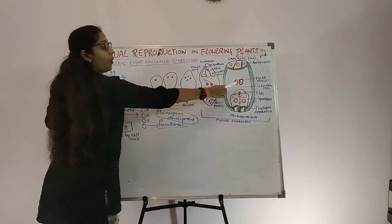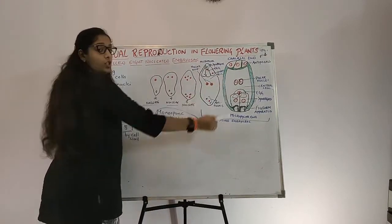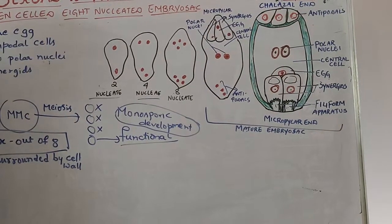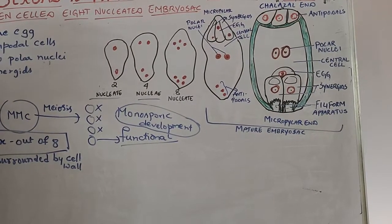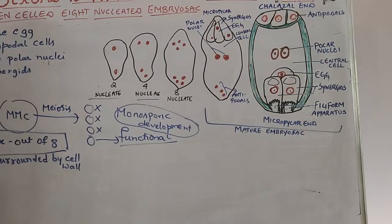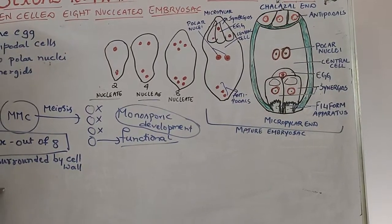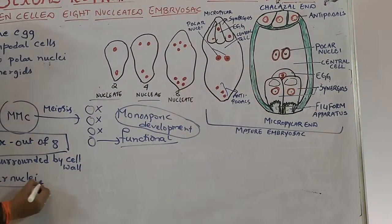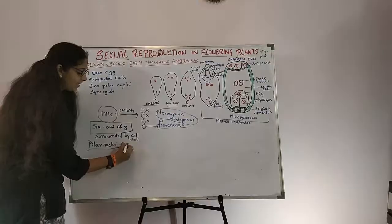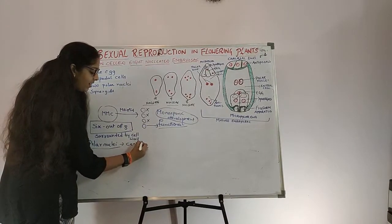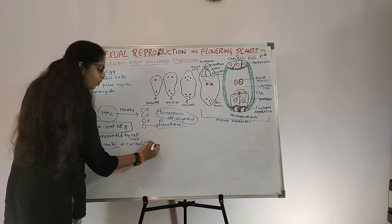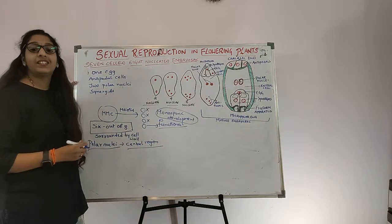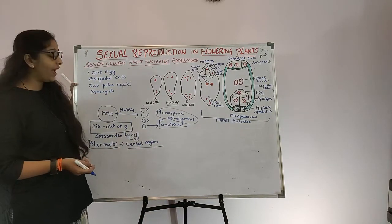The 2 polar nuclei are also known as the secondary nucleus. These polar nuclei are present in the central region of the embryo sac.